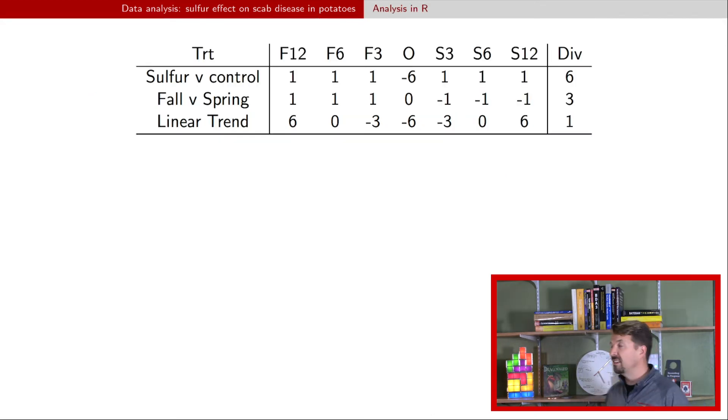So if we put these all together in a single table, this is the set of contrasts that we have. We have the sulfur versus control, the fall versus spring and the linear trend, and then the coefficients associated with each of the different seven means that we have in our dataset. And then you see the last column, the div, that's the divisor, right? Where you saw us dividing by six and three. There is a better way to construct the linear trend contrast that will provide a more meaningful interpretation to the estimates that you actually get for that contrast. And that's just a little bit beyond the scope of what we're going to talk about here. So we're going to leave it like this and just have a, is there a trend or is there not a trend?